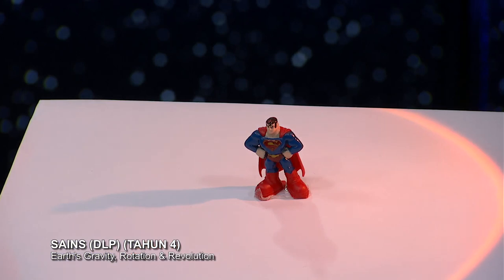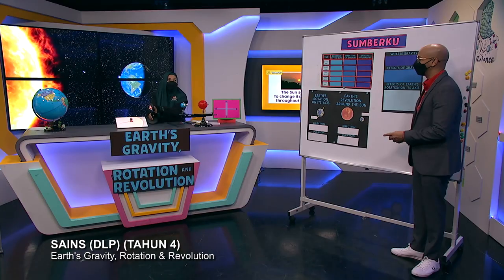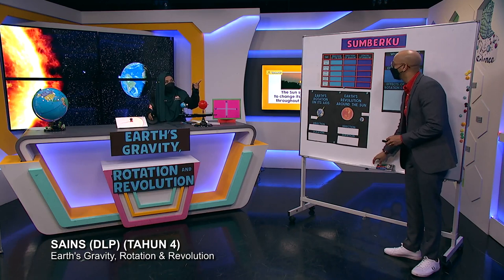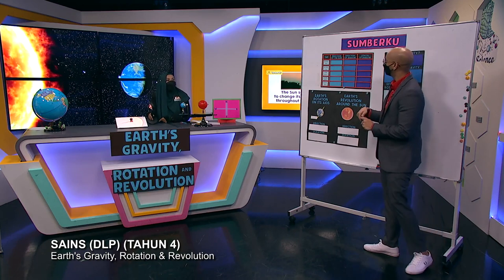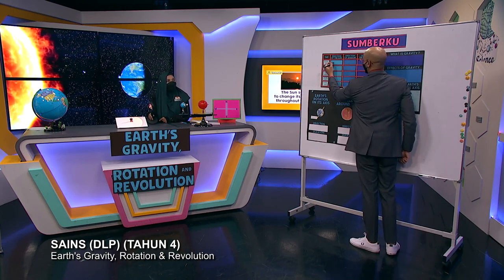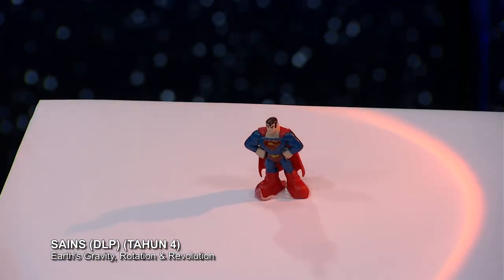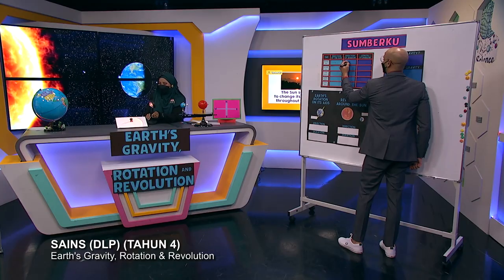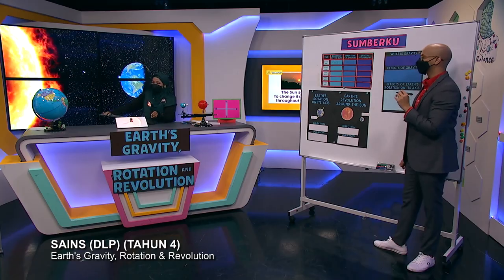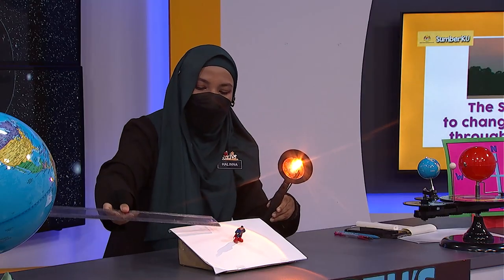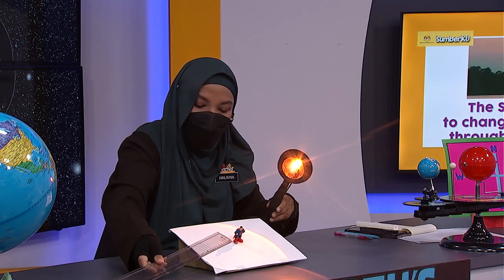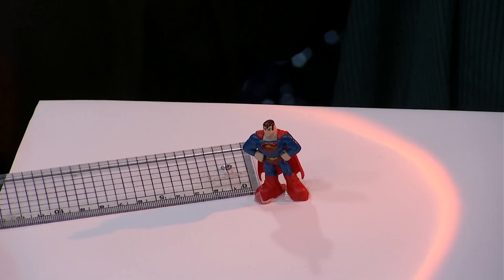We can see the shadow. The position of the sun at 8 a.m. is in the east, and the direction of the shadow is pointing towards the west. The length of the shadow is about 10 centimeters.